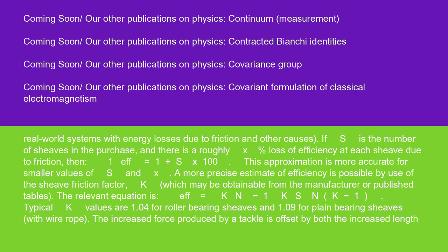If S is the number of sheaves in the purchase, and there is a roughly X percent loss of efficiency at each sheave due to friction, then 1/EFF is almost equal to 1 + SX/100. This approximation is more accurate for smaller values of S and X. A more precise estimate of efficiency is possible by use of the sheave friction factor, K, which may be obtainable from the manufacturer or published tables. The relevant equation is EFF = (K^N - 1) / ((K^S × N) × (K - 1)). Typical K values are 1.04 for roller bearing sheaves and 1.09 for plane bearing sheaves with wire rope.